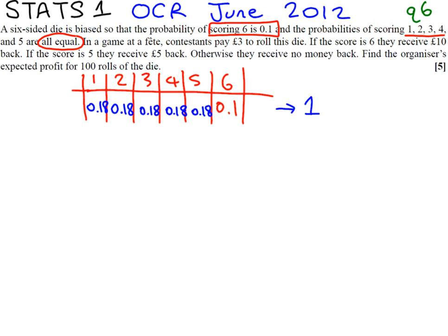If we continue to read the question, we're going to use this dice for a game at a fête. Contestants are going to pay £3 to play the game and roll the dice. If they're lucky enough to get a 6, they get £10. If they score a 5, they get £5. Otherwise, they get no money.